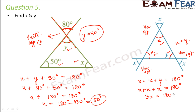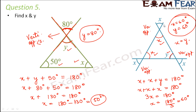Since x equals y, we can replace y with x, giving 3x equal to 180 degrees, so x is equal to 60 degrees. And since y equals x, y is also equal to 60 degrees. By applying the properties we have learned — vertically opposite angles, linear pairs, angle sum of 180 degrees, and exterior angle property — you just need to observe and calculate.